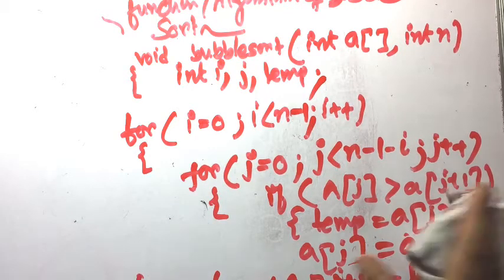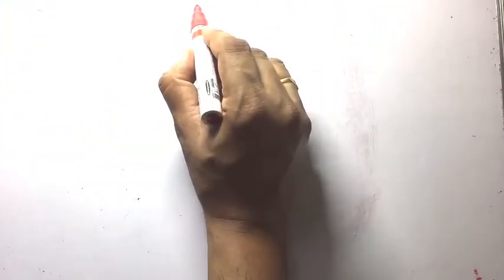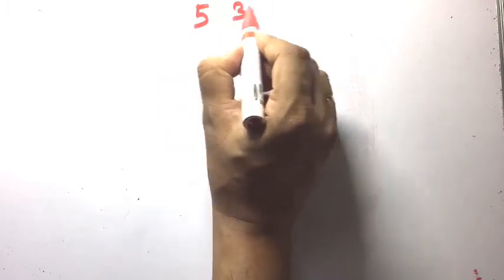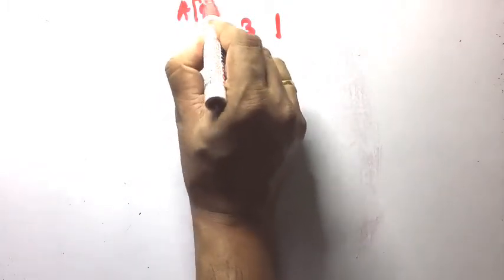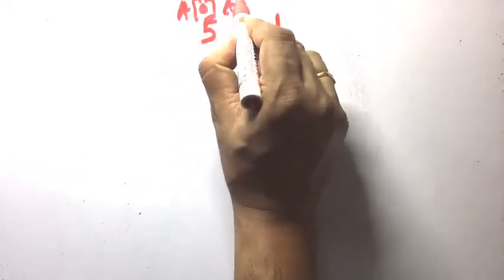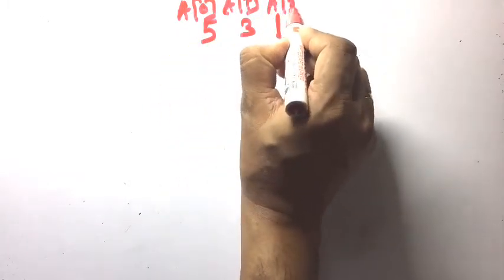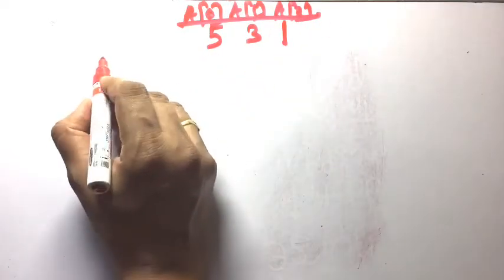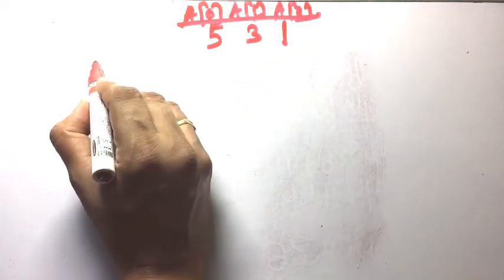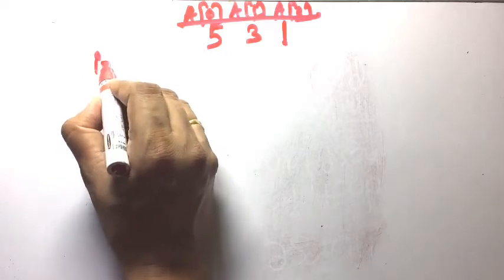Now we can run this algorithm for a set of numbers — this is called a dry run. Suppose the numbers are 5, 3, 1. We need to sort 5, 3, 1. This is a[0], a[1], and a[2]. The array values are 5, 3, 1. We know the i loop starts from 0, i less than n minus 1, i plus plus.